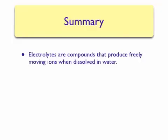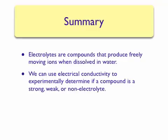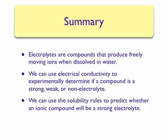To summarize: there are compounds called electrolytes that, when dissolved in water, produce freely moving ions. We can use electrical conductivity to experimentally determine if a compound will be a strong, weak, or non-electrolyte. This can be done qualitatively by hooking up a battery to a light bulb and immersing electrodes in a solution. You will do a quantitative experiment later in the course where you can actually measure the conductance of a solution numerically. We can also predict whether an ionic compound is a strong electrolyte using the solubility rules — if the rules predict that a compound is soluble in water, it is likely to be a strong electrolyte.